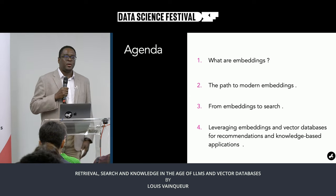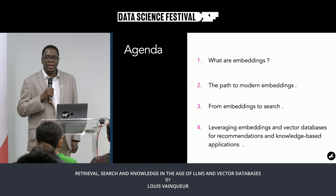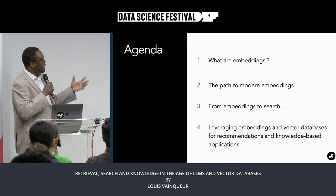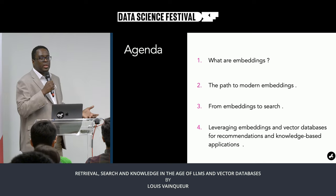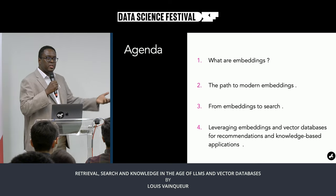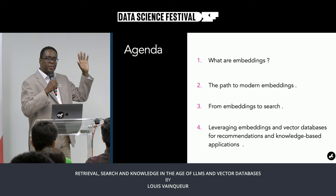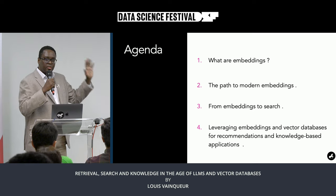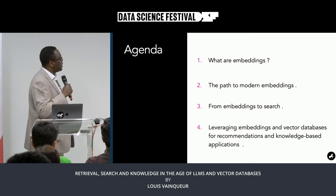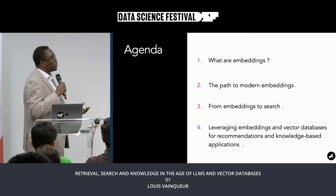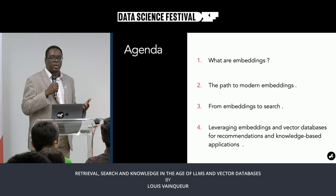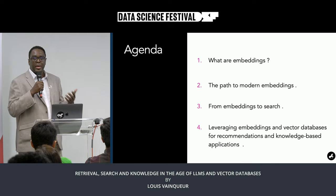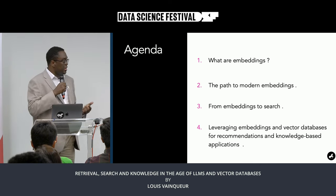We are going to talk about embeddings a lot today. That's an important element of retrieval, and this is what we are going to cover. First, what really are embeddings? Then we'll think about how we got here — how did we arrive at the point where embeddings are becoming so important for the AI and data science community?